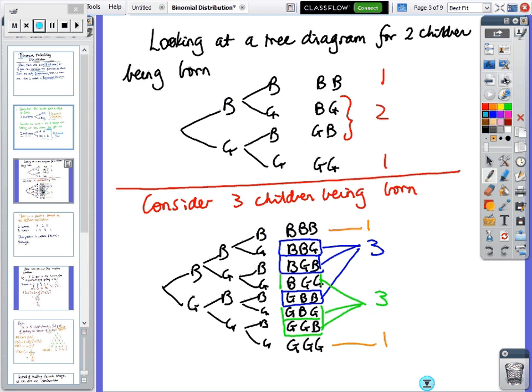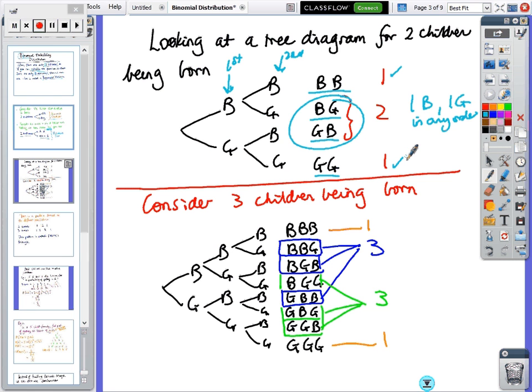Looking at a tree diagram for two children being born, there's your first child and there's the second child. You've got boy-boy, boy-girl, girl-boy, girl-girl. These two middle outcomes represent one boy and one girl in any order. There's one way of getting boy-boy, one way of getting girl-girl, but two ways of getting a boy and a girl. If you look at three children, there are three ways of getting two boys and one girl in any order, and three ways of getting two girls and one boy in any order.